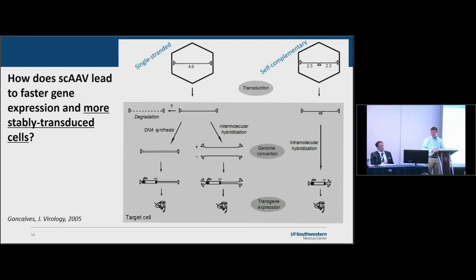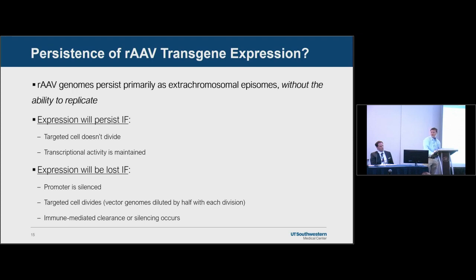Regarding persistence of recombinant AAV transgene expression: AAV will persist primarily as an extrachromosomal episome. It cannot replicate itself even if the cell replicates. Expression will persist if targeted cells don't divide and if the gene is not silenced. Expression will be lost if the promoter is silenced, if the targeted cell divides — causing dilution of genomes — or if there is immune-mediated clearance or other silencing.